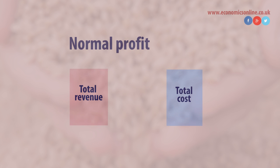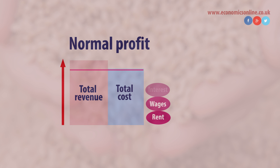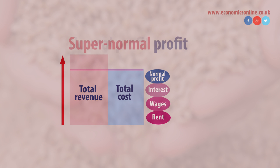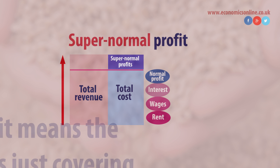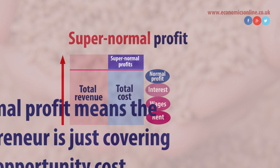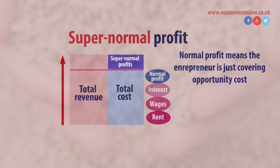Normal profit occurs when total revenue equals total costs. Total costs include rents, wages, interest, and normal profits. Normal profit occurs when the entrepreneur covers opportunity cost.